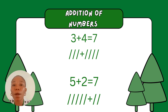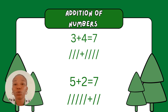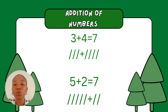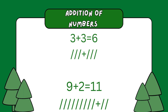Addition of numbers. We have three plus four equals to seven. How do we get this? Look at the strokes. The first strokes — we have three strokes plus four strokes. When you count all the strokes together, equals to seven strokes. The next one is five plus two equals to seven. When you count five strokes plus two strokes, count all the strokes together: one, two, three, four, five, six, seven. We have seven strokes.